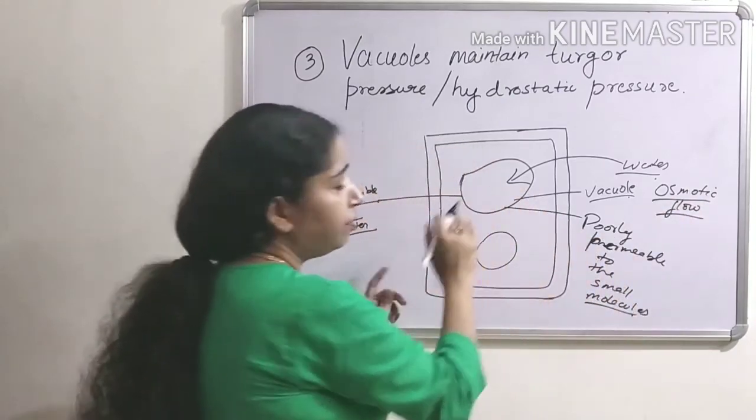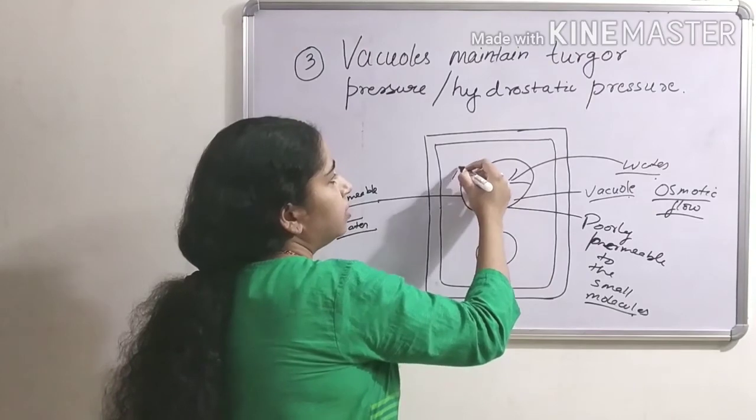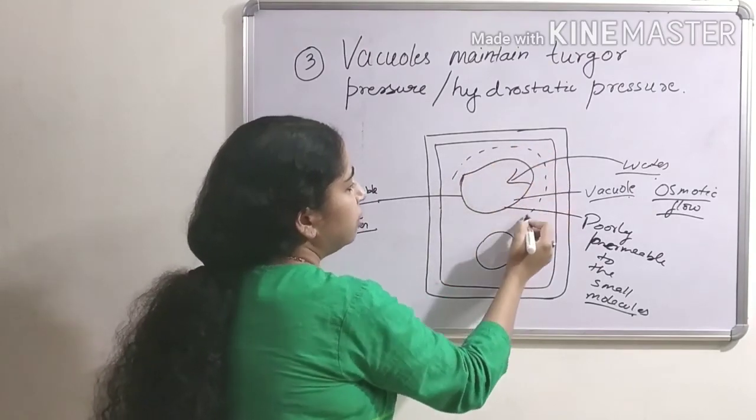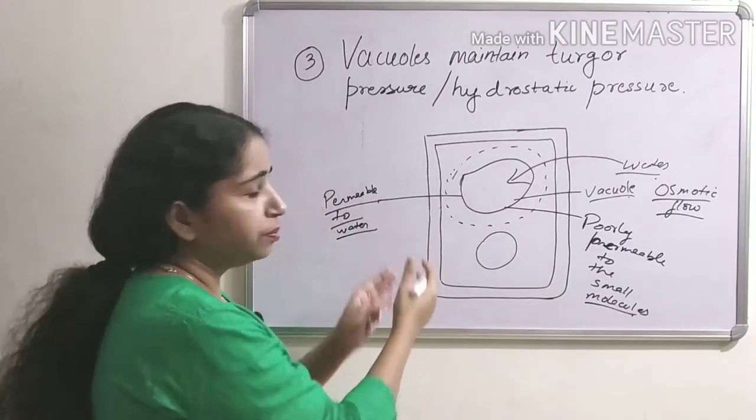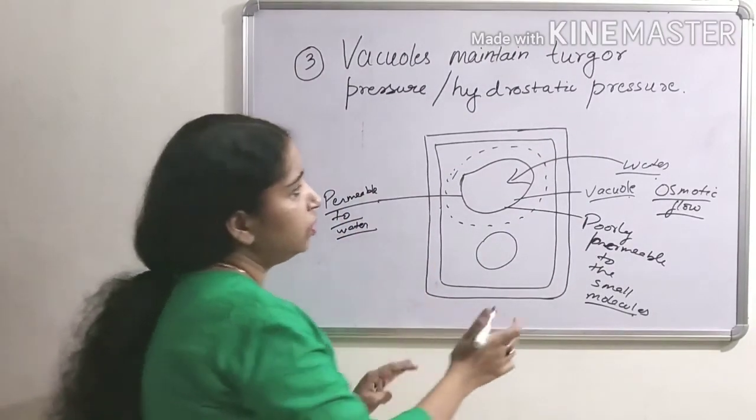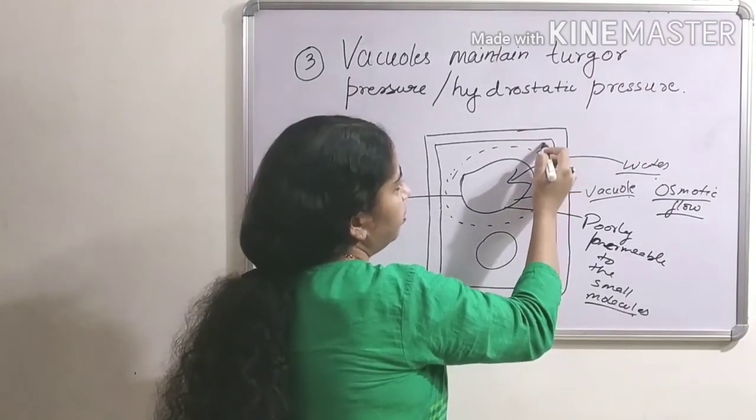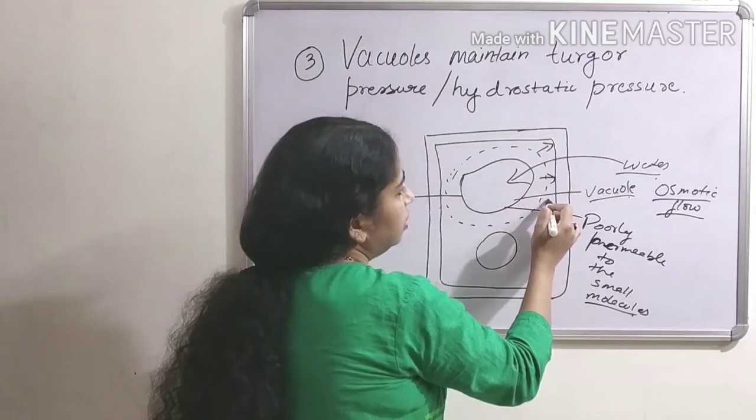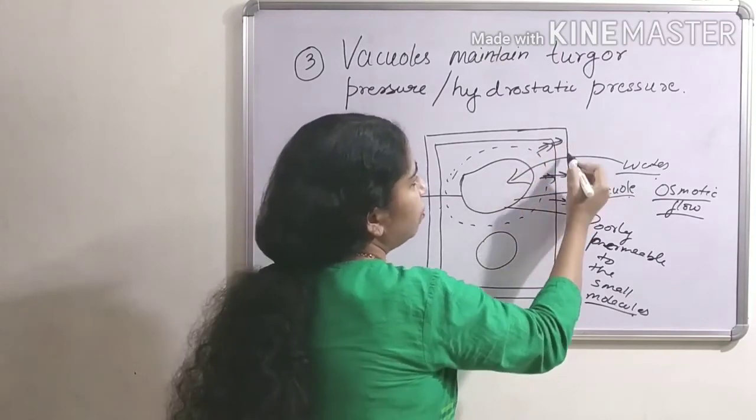And this influx of water causes the vacuole to expand. Now this vacuole expands, and because of this expansion, a turgor is created inside the cell. Now this hydrostatic pressure pushes the cell membrane against the interior of the cell wall.